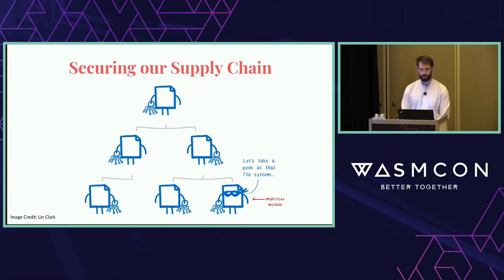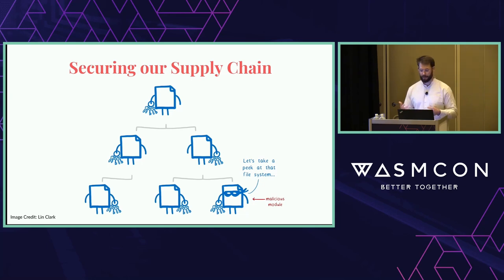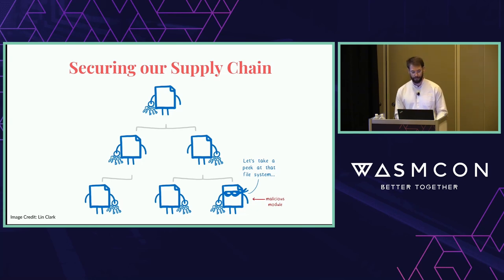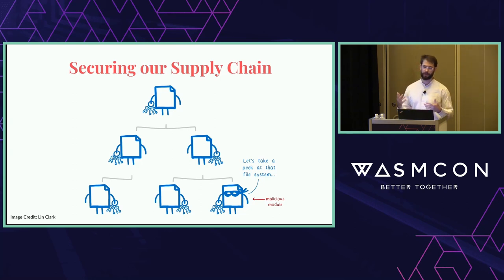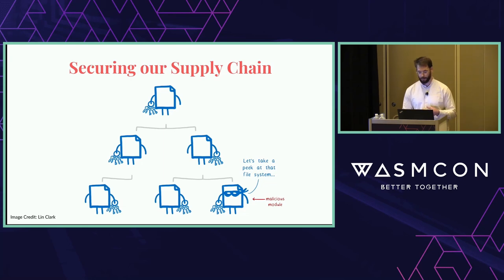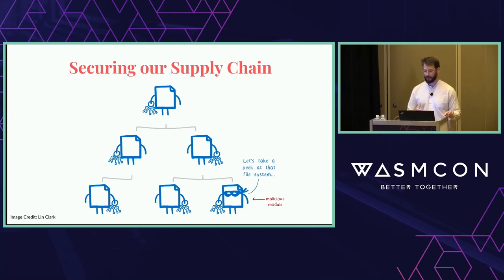Malicious dependencies are becoming more common. This is when an attacker gains control over a library that your application depends on — say, for unit testing — and they add code to search the file system to steal SSH keys. The next time you upgrade your dependencies and run tests, your world falls apart. We cannot let WasmTime, and by extension any application that embeds WasmTime, be compromised by malicious third-party dependencies. Wasm itself can help: the component model and WASI give us capabilities-based security and lightweight isolation, so you can put untrusted dependencies into their own sandbox and limit the blast radius.